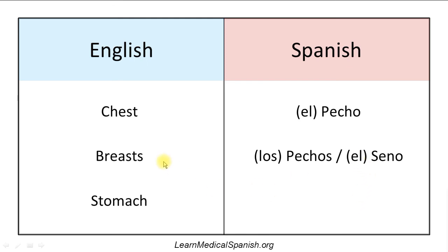Another way to say breasts is el seno — that kind of means the bosom. People sometimes make it plural as well and say los senos. So there you have it, a couple ways to say breasts. And depending on the context, that can mean chest or breast — the word pecho.